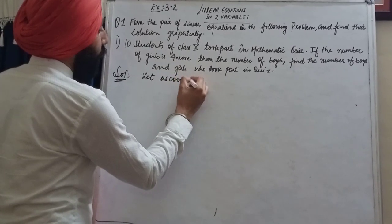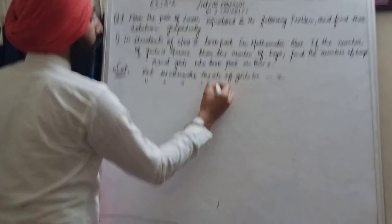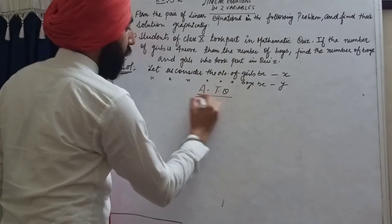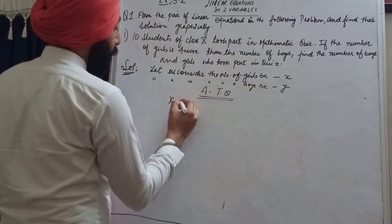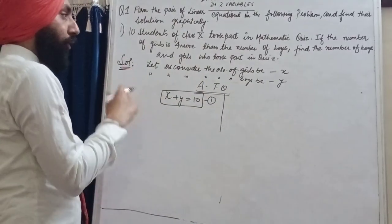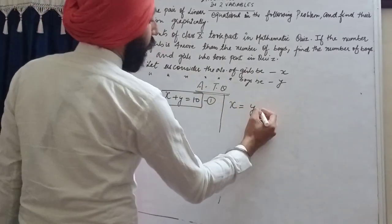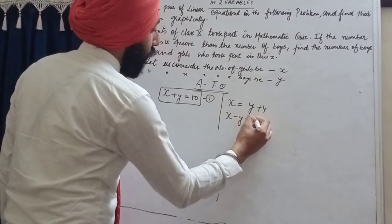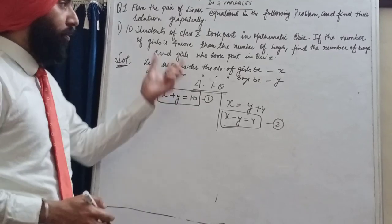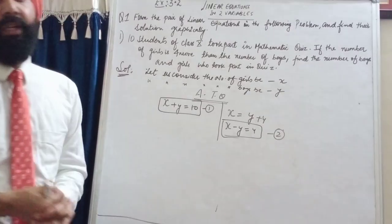The solution will be like this: let us consider the number of girls as x, and similarly the number of boys as y. According to the question, the total number of students is x plus y equals 10 — that is equation number one. Similarly, he told us that the number of girls is four more than the number of boys, so x minus y equals 4 — that is equation number two. This is the pair of linear equations we got from this problem.